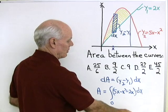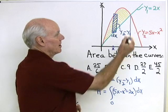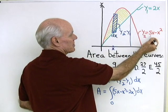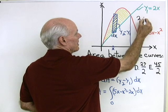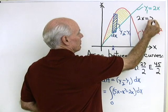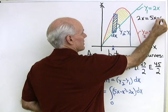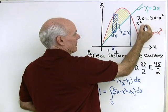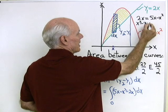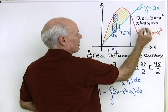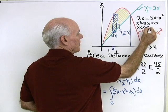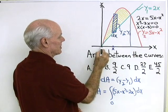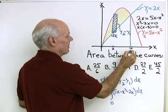Let's fill in this top limit of integration. That's where these two curves intersect, at the point 2x equals 5x minus x squared. Put this in standard form: x squared minus 3x equals 0. Factor that: x times x minus 3 equals 0. They intersect at 0 and at 3.